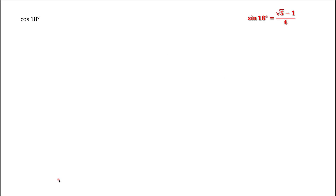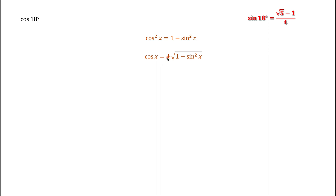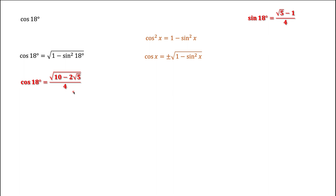Now let's look at cosine of 18 degrees. Finding sine of 18 degrees was the hardest part — everything else is much easier. We use the Pythagorean identity to express cosine through sine, taking the square root to get cosine x equals plus or minus the square root of (1 minus sine squared x). Since cosine of 18 degrees is positive, we choose the plus sign. Substituting our value for sine of 18 degrees and simplifying, we get the expression for cosine of 18 degrees.